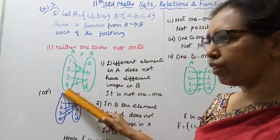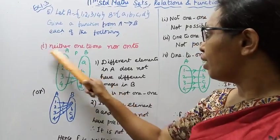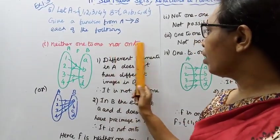A is 1, 2, 3, 4. B is A, B, C, D. Now let's look at neither 1-to-1 nor onto.